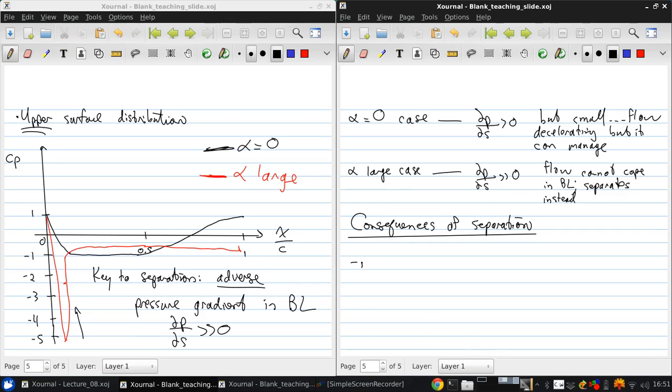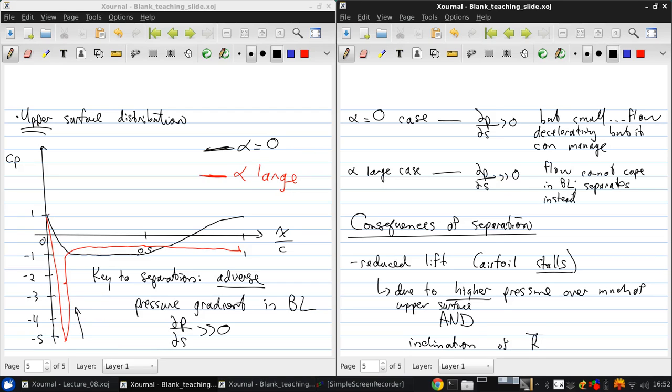There are two major consequences. The first is reduced lift, and another term for this is saying that the airfoil has stalled. This is due to a higher pressure over much of the upper surface. The fact that this red line is above the black line for a large percentage of the length of the airfoil, and it's also due to the inclination of the resultant force vector on the airfoil.